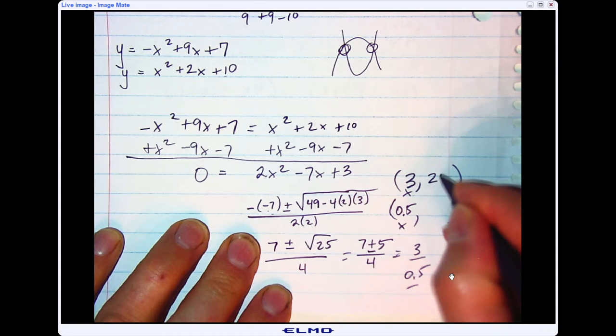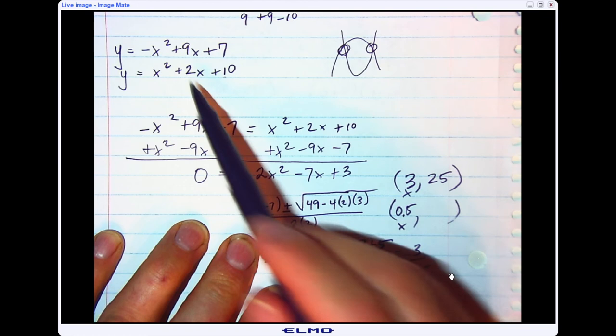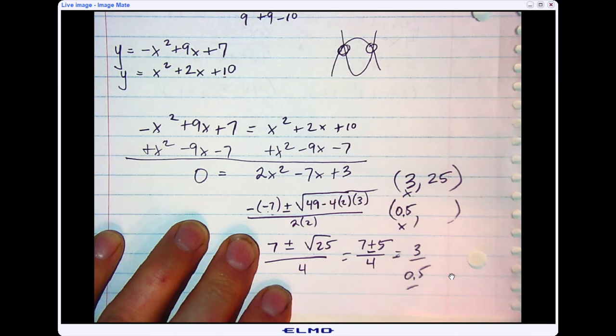And I should check to make sure that works on the top as well. So 3 squared is 9. That makes it negative 9. 3 times 9 is 27. 27 minus 9 is 18, plus 7 is 25. It works. So I know that would be one solution for my system because it makes both equations true.